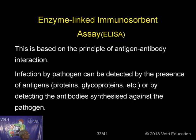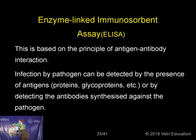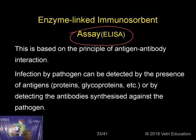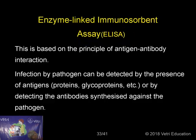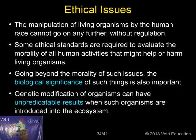Enzyme-linked immunosorbent assay — ELISA — is based on the principle of antigen-antibody interaction. Infection by a pathogen can be detected by the presence of antigens in the form of proteins, glycoproteins, etc., or by detecting the antibodies synthesized against the pathogen. ELISA is used for many investigatory procedures, and the infection by a pathogen can be detected by the presence of an antigen in any form.